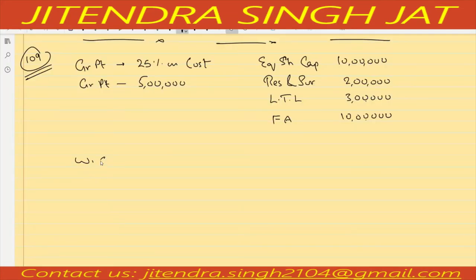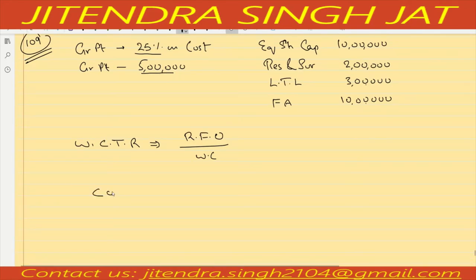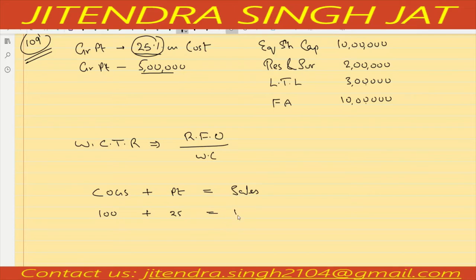Working capital turnover ratio = Revenue from Operations / Working Capital, and neither value is directly given. Gross profit = 5 lakh and gross profit is 25% on cost. We know Cost of Goods Sold plus Profit equals Sales. If COGS is 100, profit is 25, and sales are 125. Gross profit is given as 5 lakh, so we need to find sales.